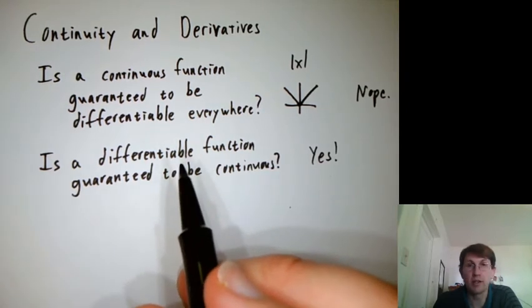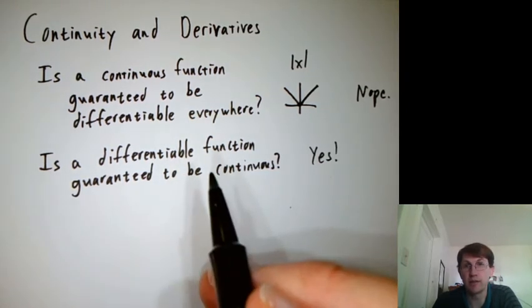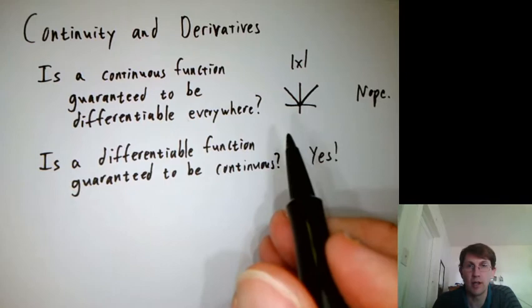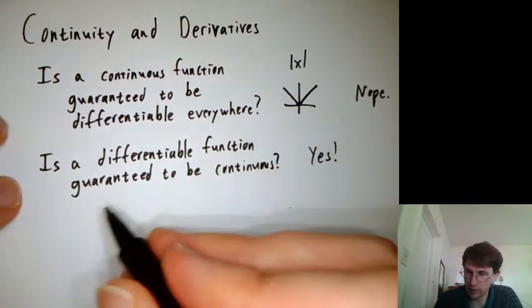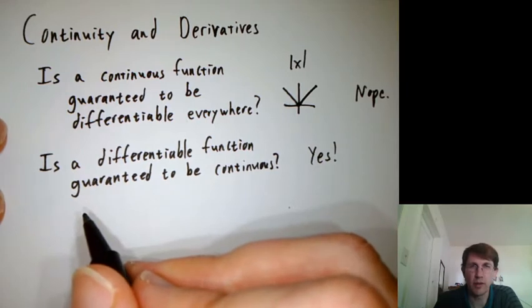So we like continuous functions because they're nice, right? Their limits exist. We also like differentiable functions because they're nice. What else can we say about that?